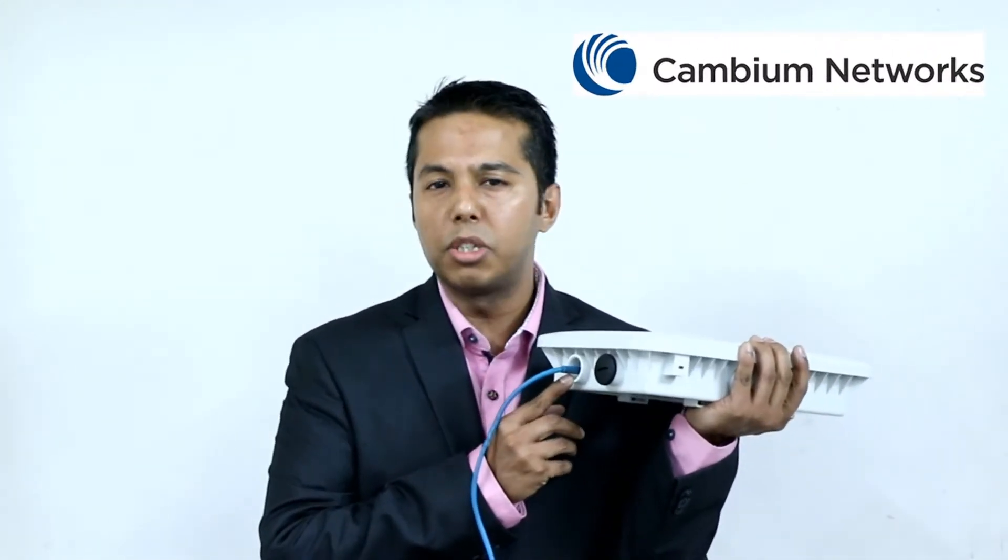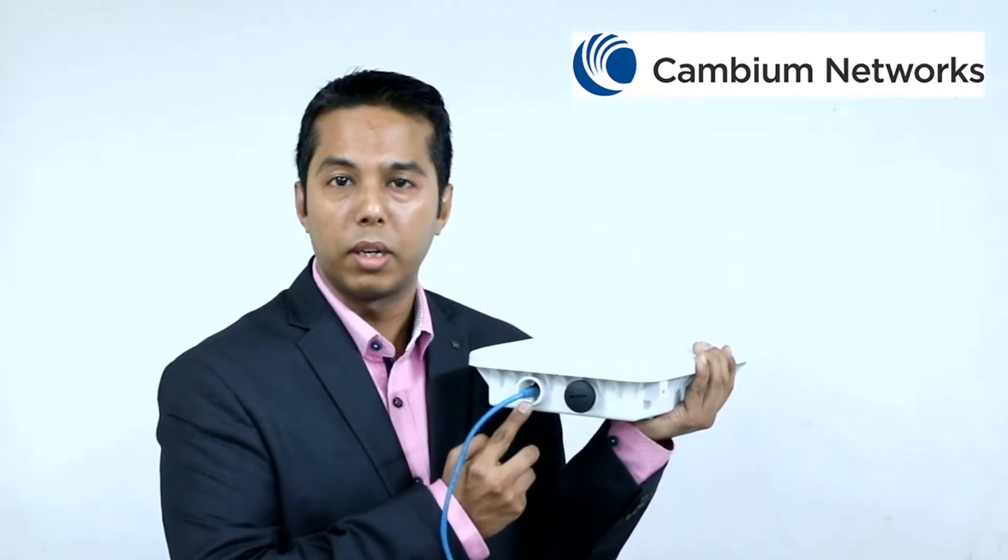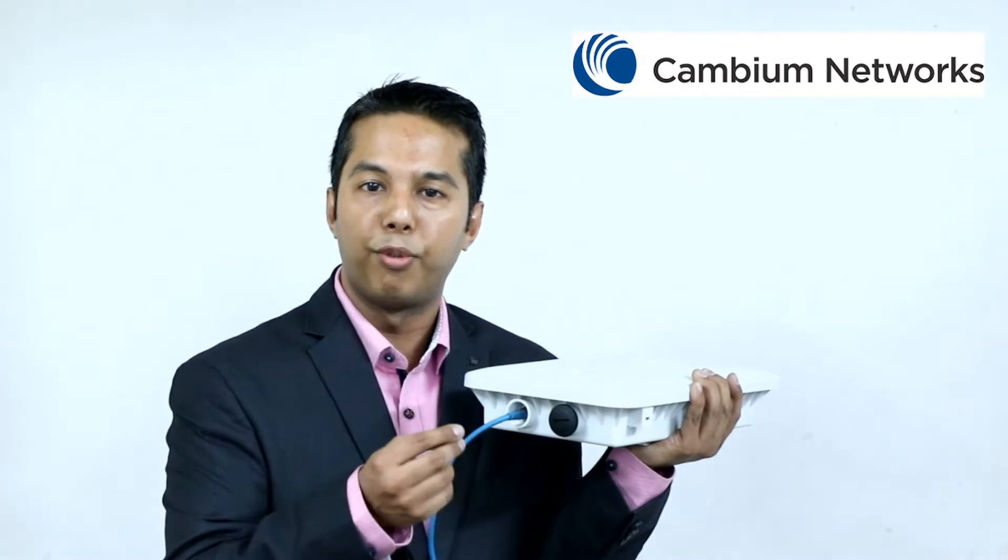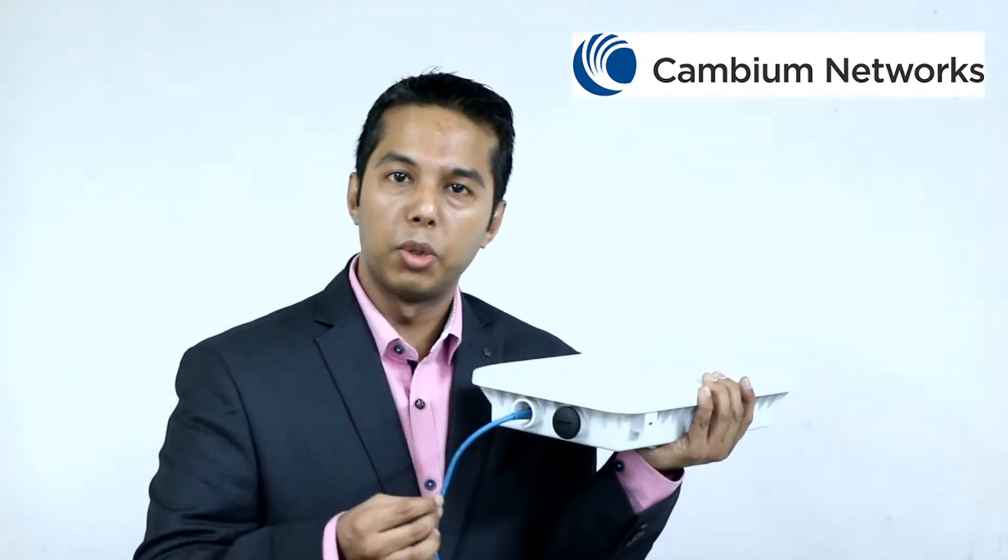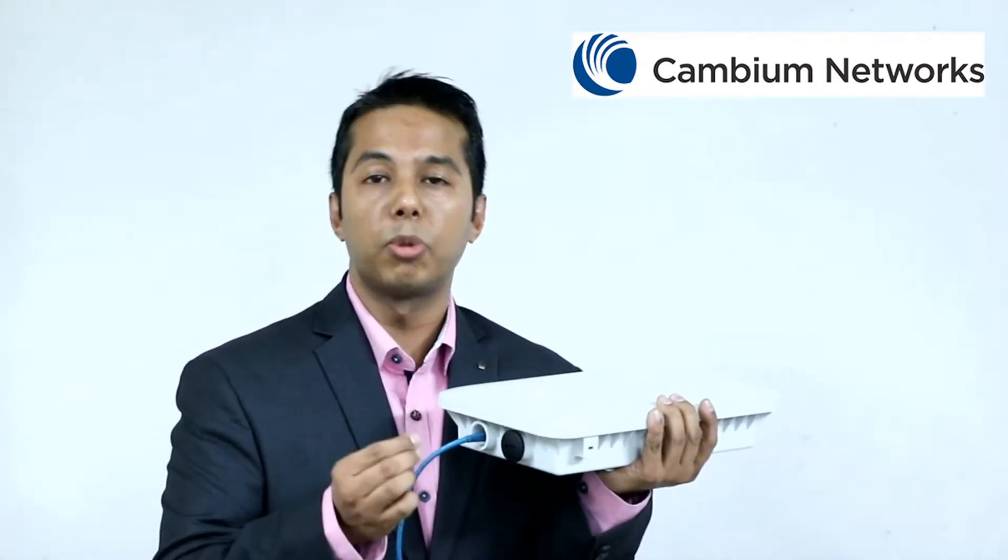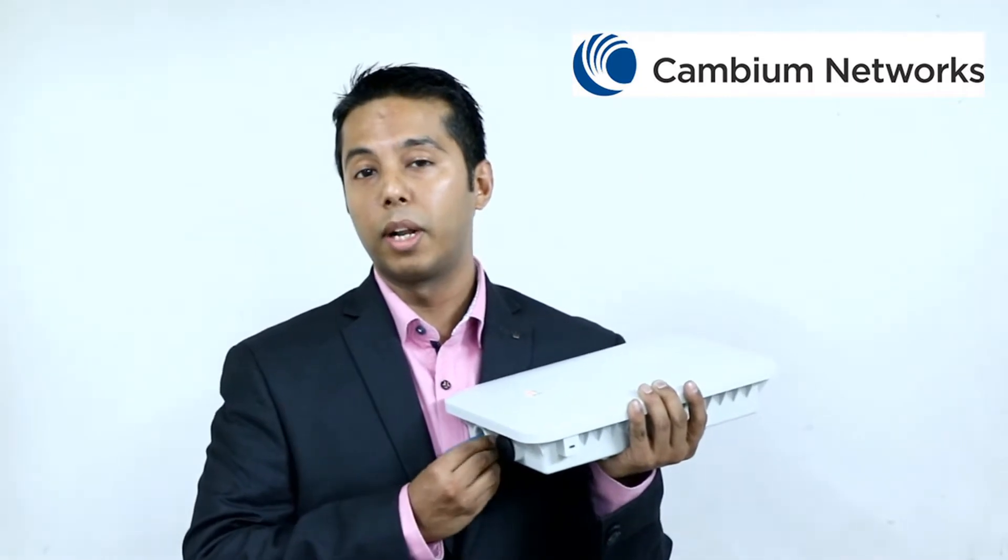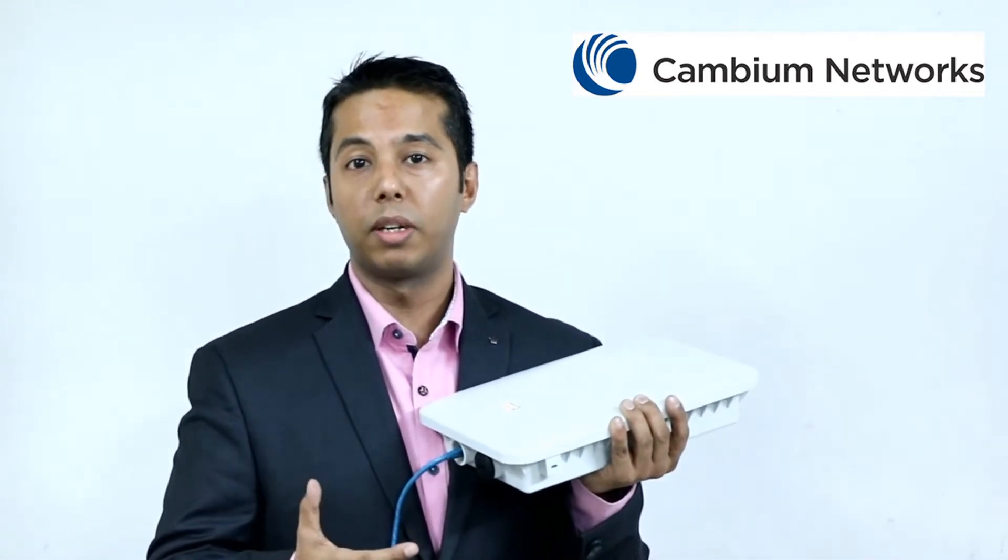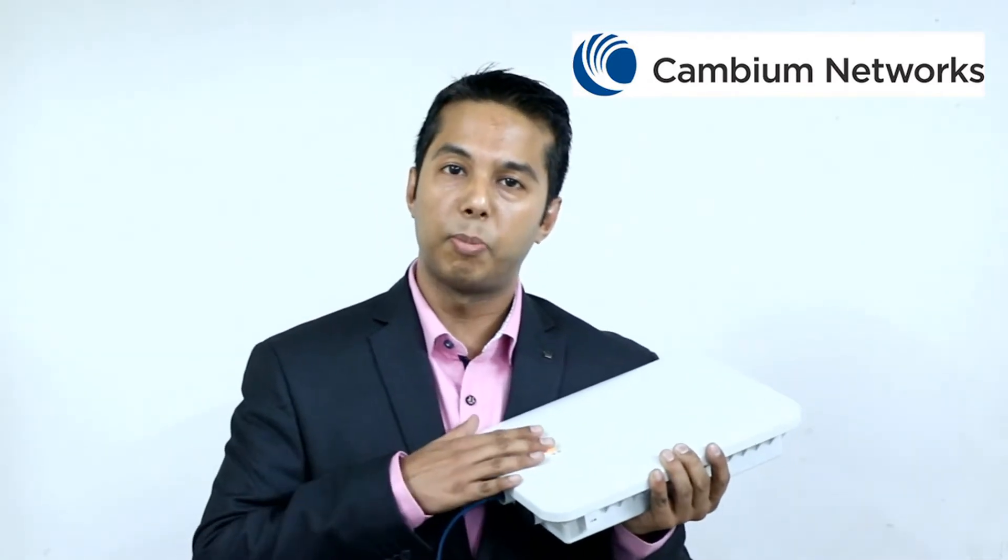There is also a reset button just below the ethernet 1 port. This particular reset button has to be pressed for about 14 seconds in order to do the factory defaults. An important point to be noted, this reset button is supposed to be pressed very gently as it might actually go ahead and damage this particular reset button, which eventually will result in the replacement of the access point.